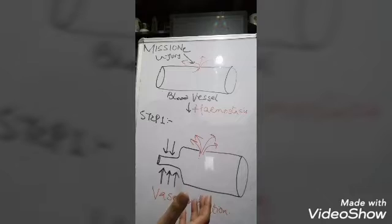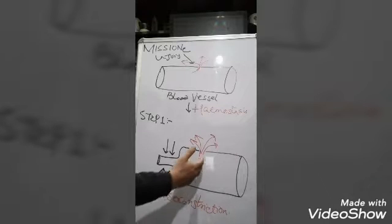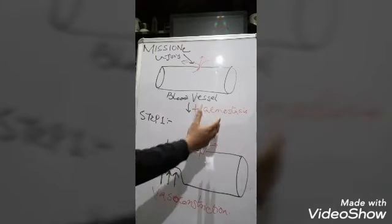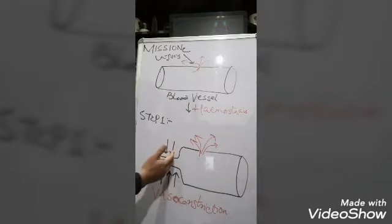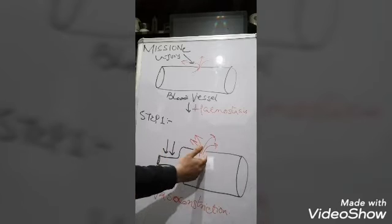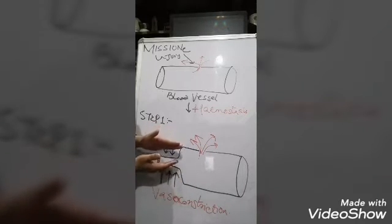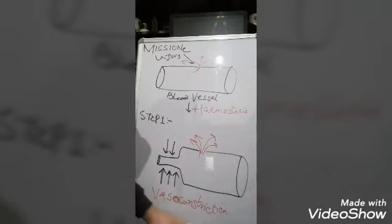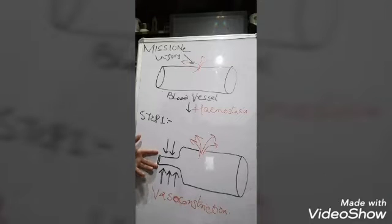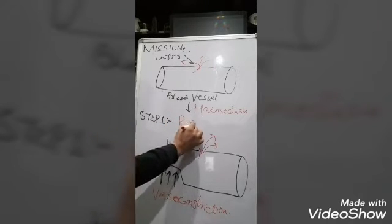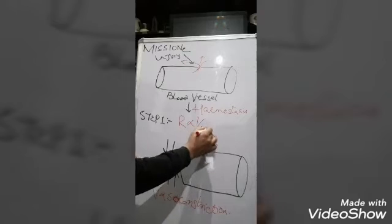Vasoconstriction means that the blood vessel at the site prior to the injury becomes narrower — it becomes constricted. This constriction of the blood vessel we call vasoconstriction. When the blood vessel becomes narrow, we know from the famous equation that resistance is inversely proportional to the radius to the fourth power.